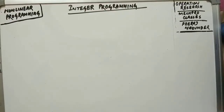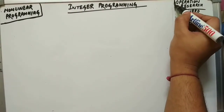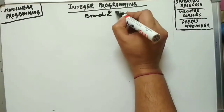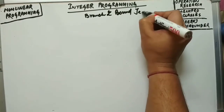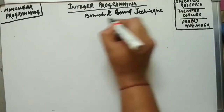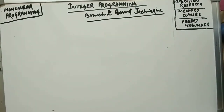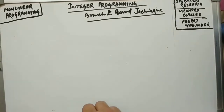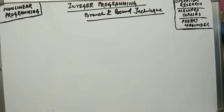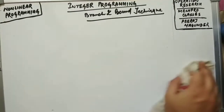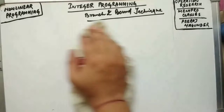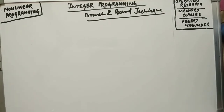Welcome students to our next class of nonlinear programming. Today we are covering integer programming problems using the branch and bound technique. There are many techniques for solving integer-type problems, but we are mainly focusing on branch and bound in our syllabus. Please watch the whole video for a clear concept of how to solve integer-type problems using this technique.